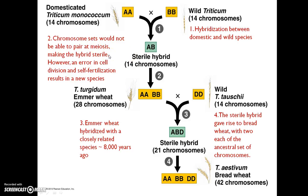However, an error in cell division and self-fertilization resulted in a new species — emmer wheat, which has 28 chromosomes, representing a doubling of the number of chromosomes. Emmer wheat in turn hybridized with a closely related wild Triticum species with 14 chromosomes around 8,000 years ago, and produced another sterile hybrid with 21 chromosomes. That sterile hybrid gave rise to modern bread wheat with 42 chromosomes — two each of the ancestral sets of chromosomes.